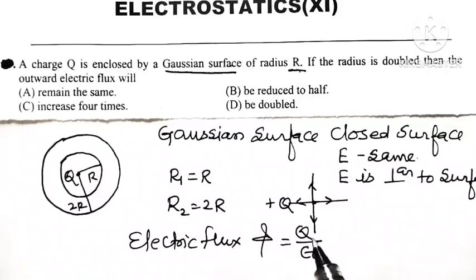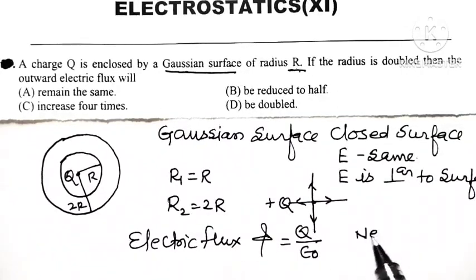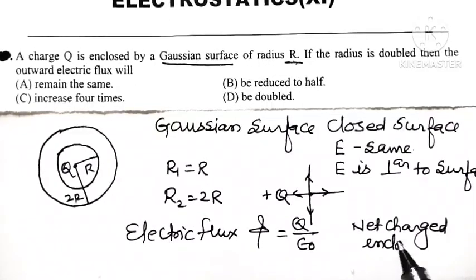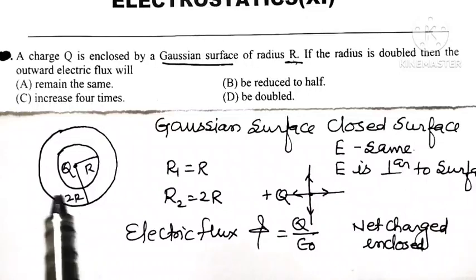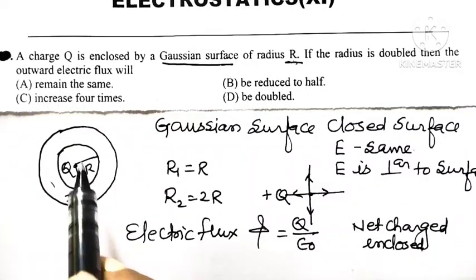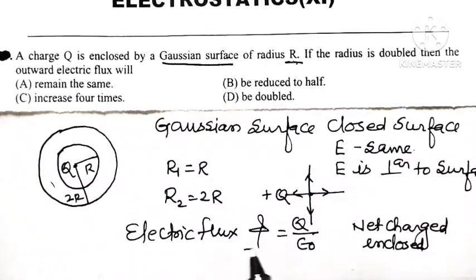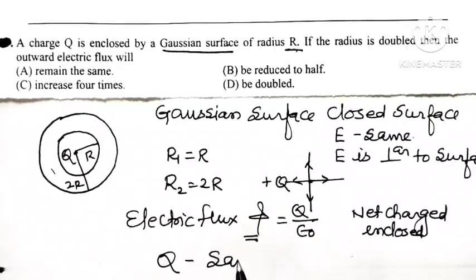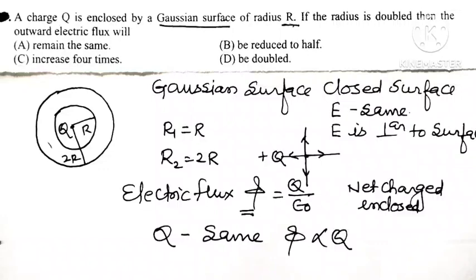Electric flux depends only on Q, which represents the net charge enclosed by that closed surface. Flux associated with a closed surface depends on the net charge enclosed by that surface and not on the volume of the surface. So whether charge Q is enclosed by a sphere of radius R or a sphere of radius 2R, the outward electric flux remains unchanged because charge Q remains unchanged.